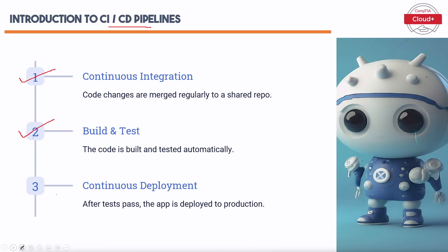Number two is Build and Test, where the code is built and tested automatically. Automated testing ensures that new code does not introduce errors or regressions, maintaining the stability of the application. Number three is Continuous Deployment. After tests pass, the app is deployed to production, allowing for rapid and reliable deployment of updates to users, minimizing manual intervention and errors.